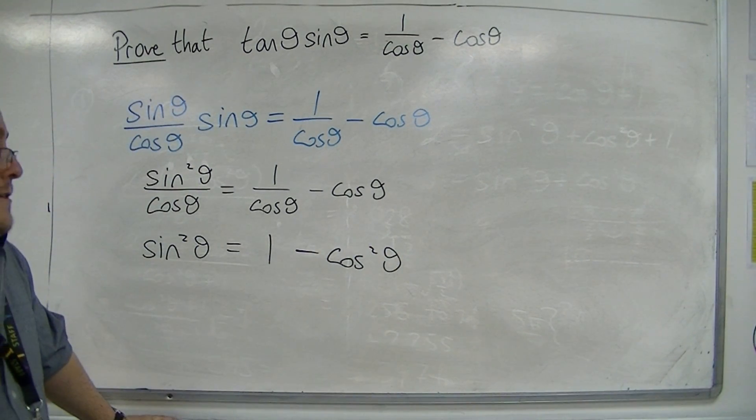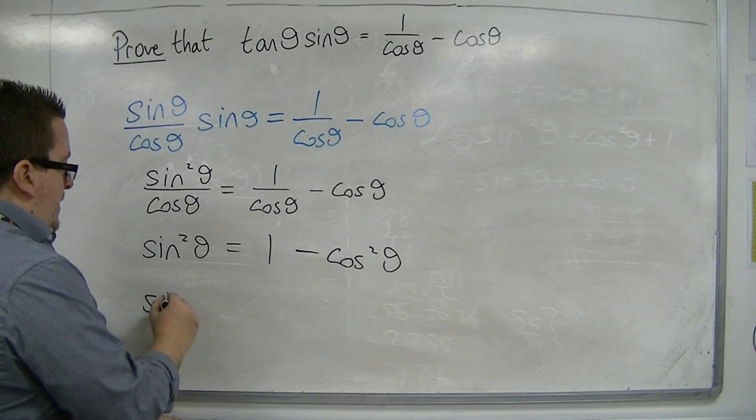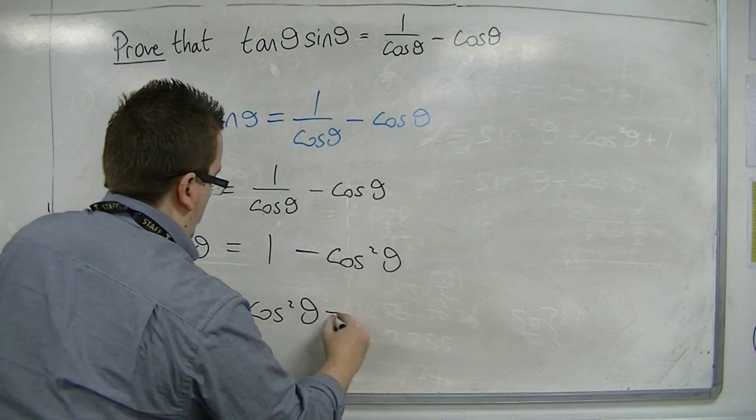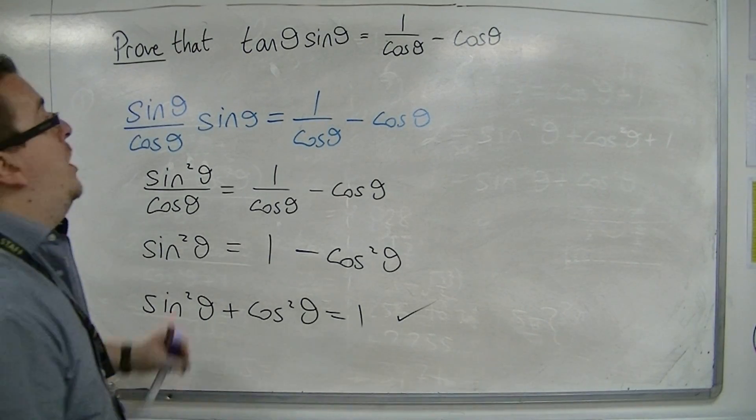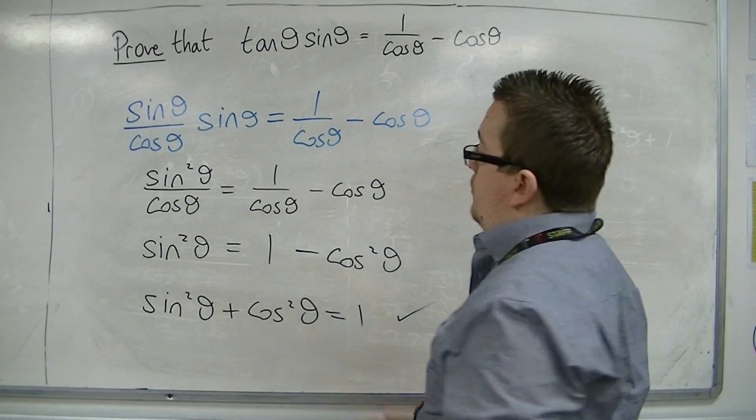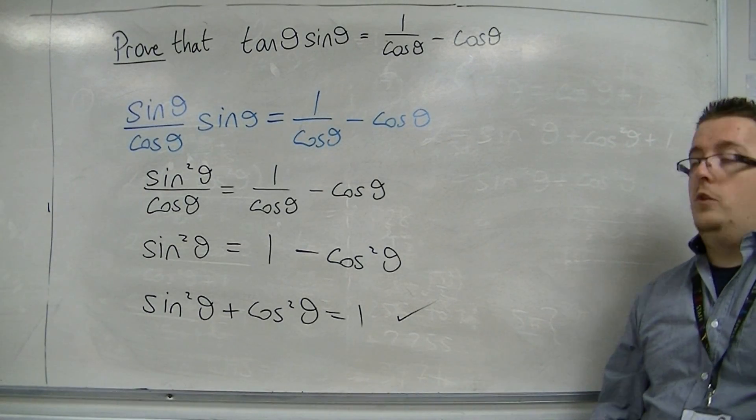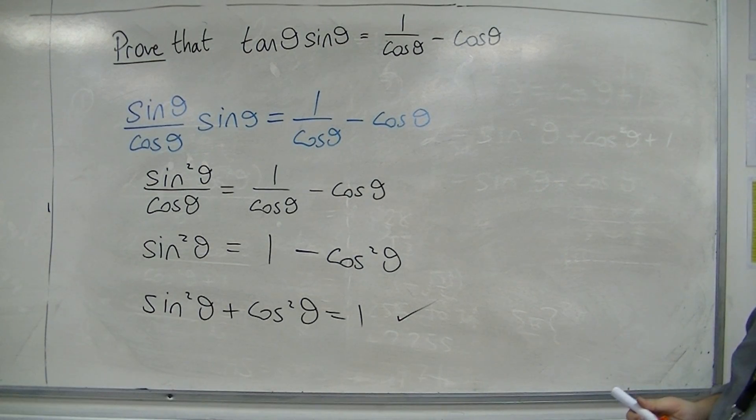So you should see where we're at now. Adding cos squared theta to both sides, we arrive at sin squared plus cos squared equals 1, as required. So I've shown that this is just a rearrangement of sin squared plus cos squared equals 1, and so the left-hand side is equal to the right-hand side.